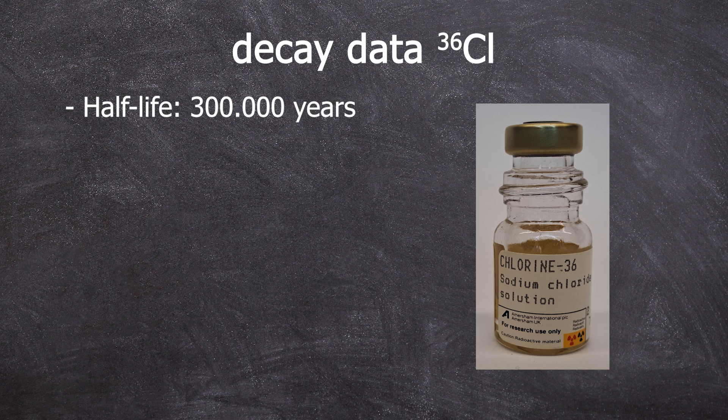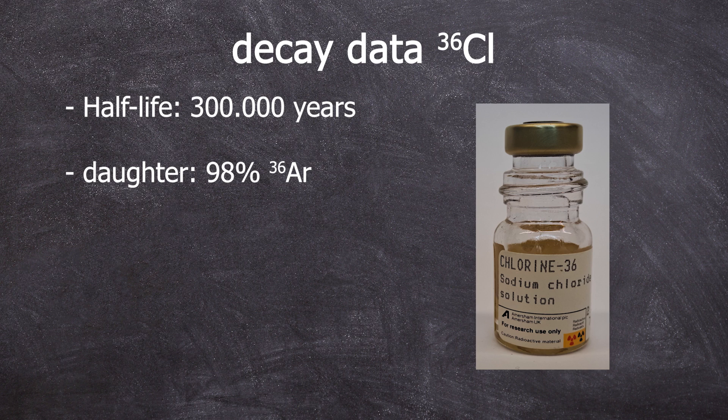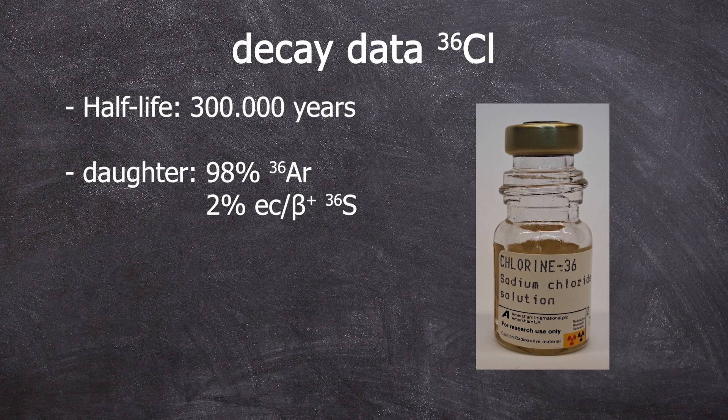Chlorine-36 has a half-life of around 300,000 years and it's a beta-only emitter. It decays to Argon-36 via beta-minus decay 98% of the time and to Sulfur-36 via electron capture beta-plus decay 2% of the time.